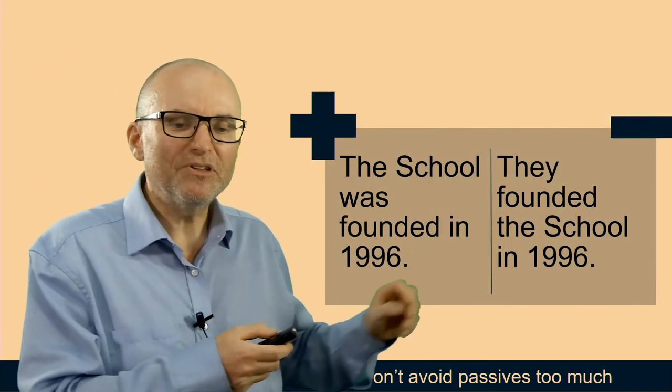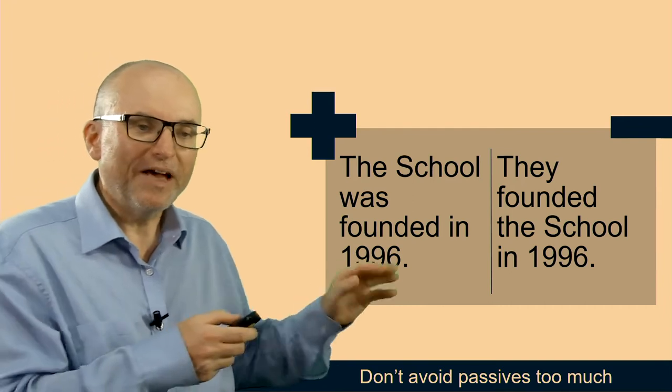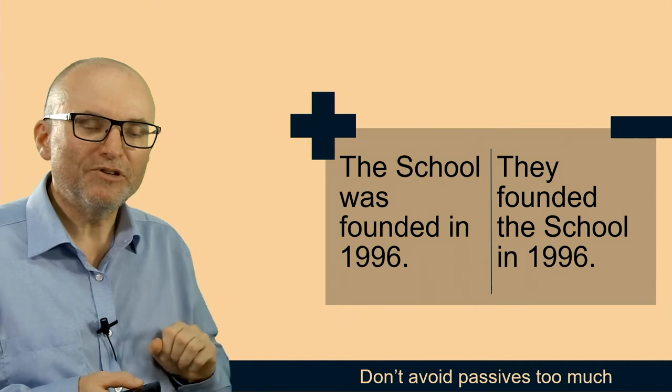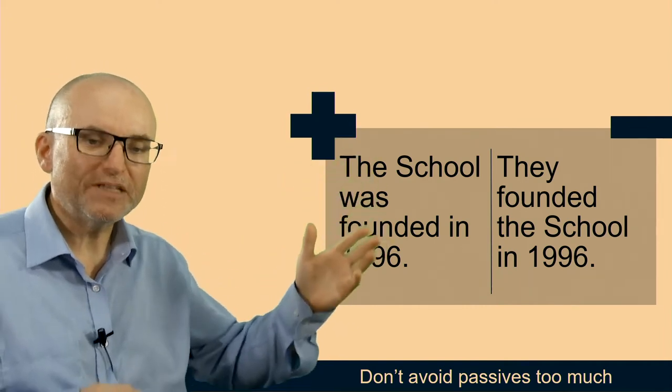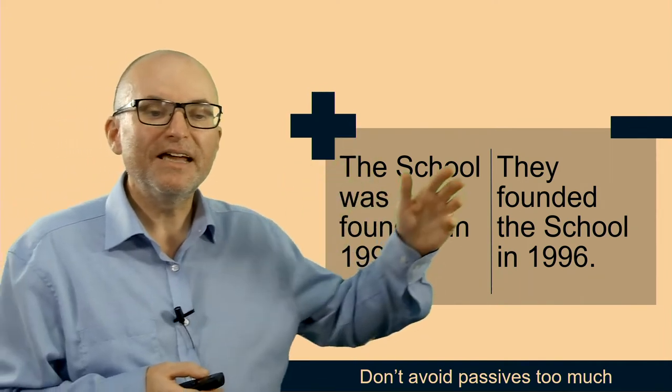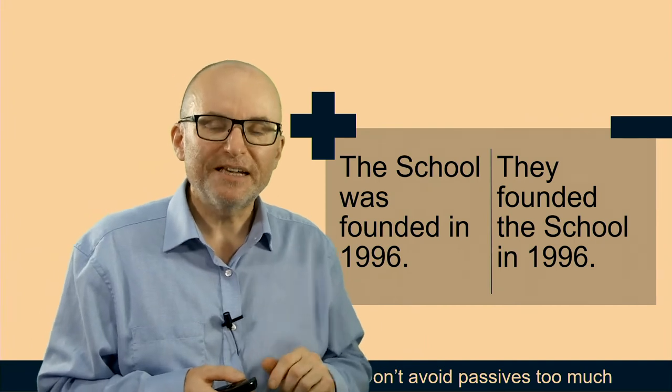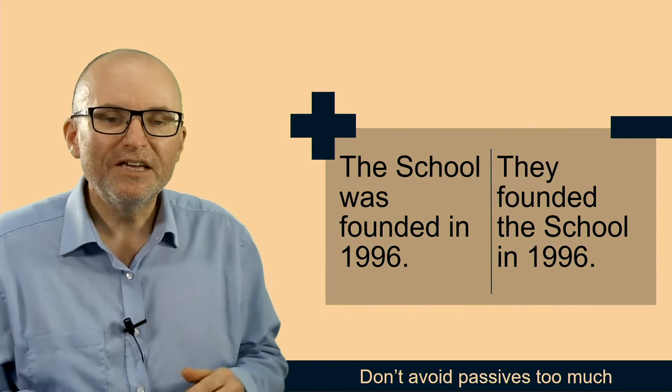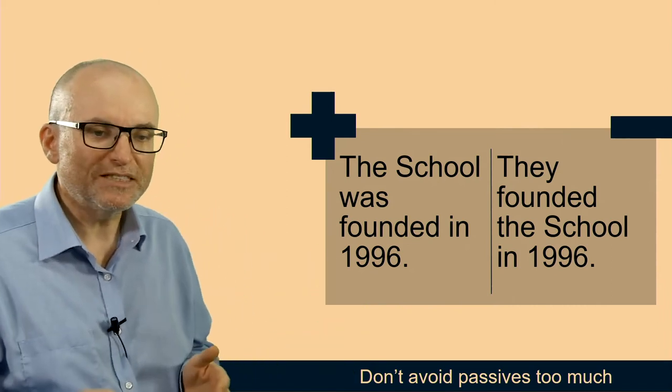So here are some examples of advice and when it's not appropriate. For example, if you're told to avoid passives, you have two sentences: 'The school was founded in 1996' and 'They founded the school in 1996.' Obviously the first one is much more appropriate in almost every context you can think of using that sentence.